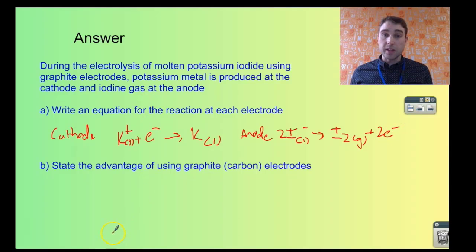State the advantage of using graphite electrodes. Graphite electrodes conduct electricity, but they won't react necessarily. They're not going to react with the potassium or the iodine gas. So they're inert. They don't react, but they can still conduct electricity.